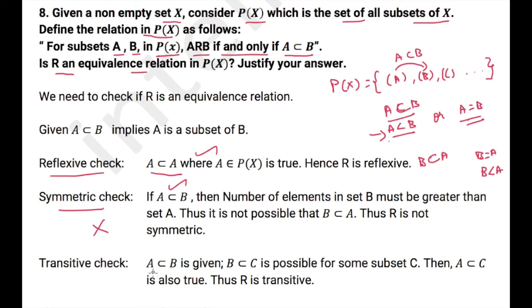Transitivity, given A is the subset of B and B is the subset of C, then obviously A is the subset of C. Thus, R is transitive.